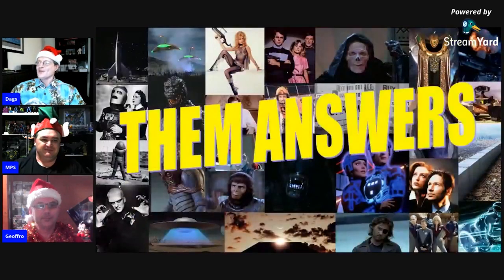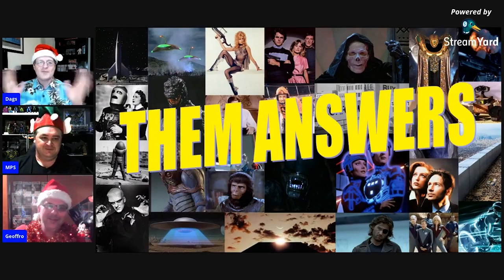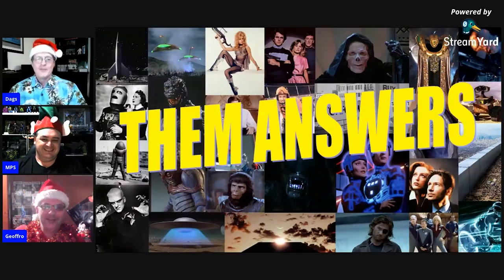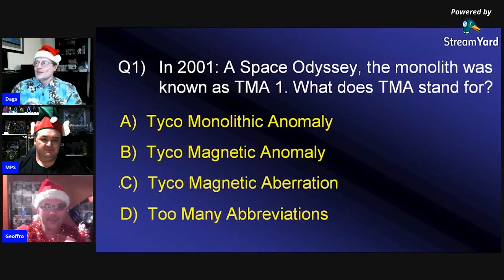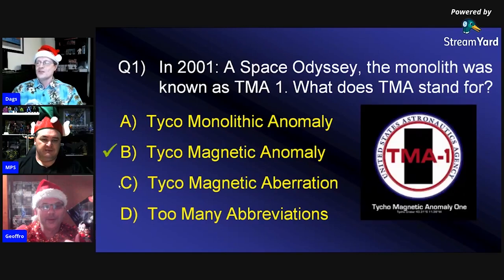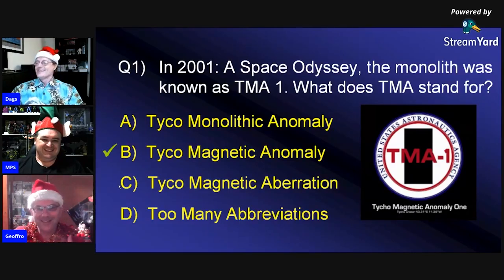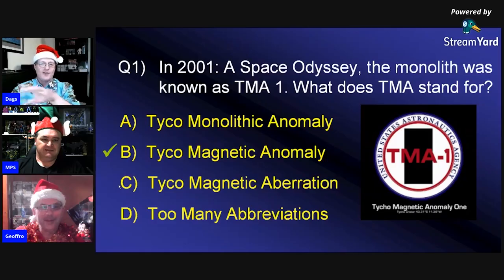Now tally up your answers. You win absolutely nothing except promotion to level seven fandom — because your nerdiness is awesome. Answer one: In '2001: A Space Odyssey,' TMA stands for Tycho Magnetic Anomaly. The host deliberately included three 'Tycho' options to make it tricky. Jeffro got it right!